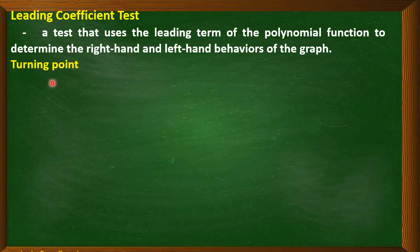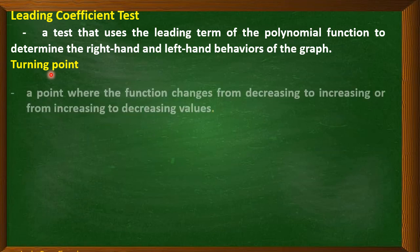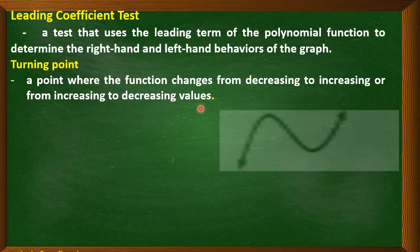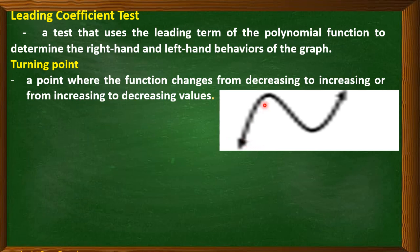Another concept is the turning point. What is a turning point? It is a point where the function changes from decreasing to increasing, or from increasing to decreasing values. For example, we have a graph — this point here is the first turning point, and this is the second turning point.